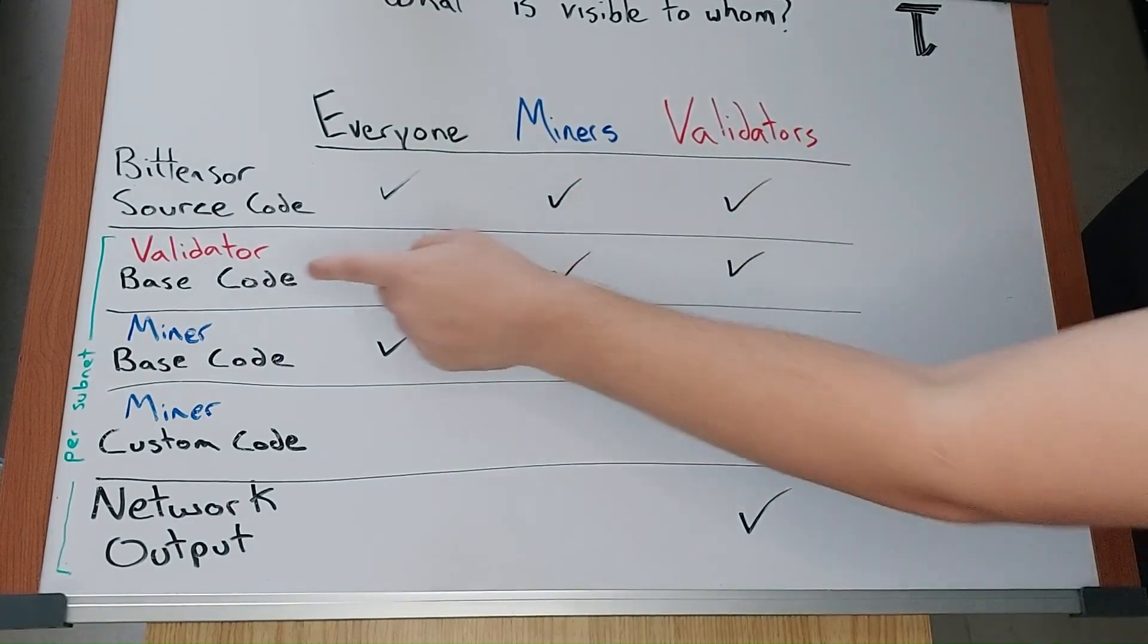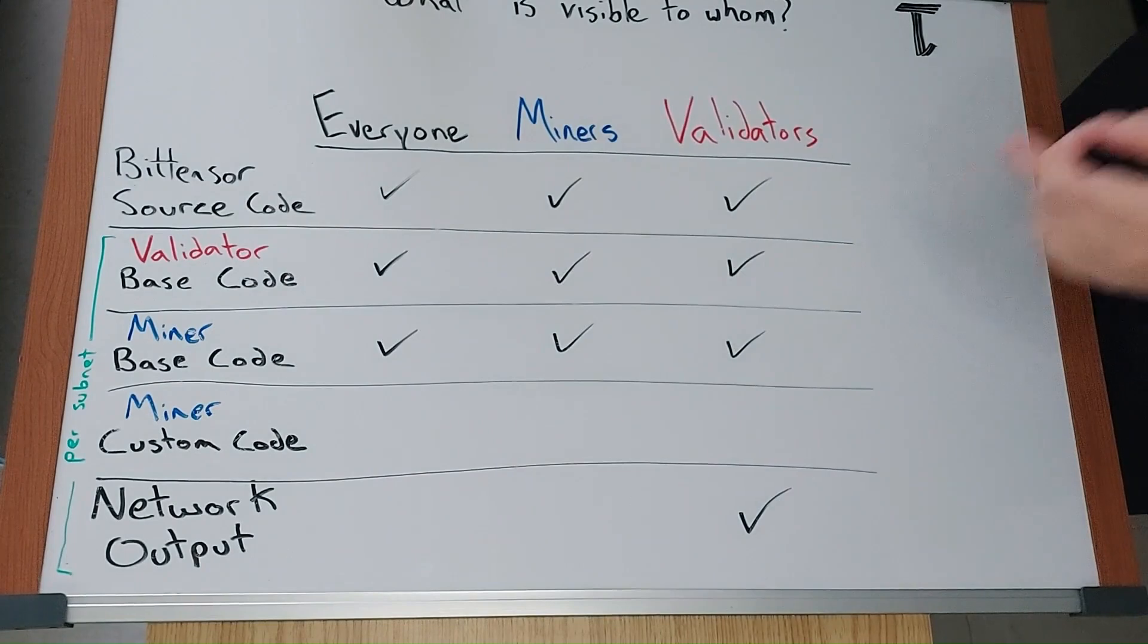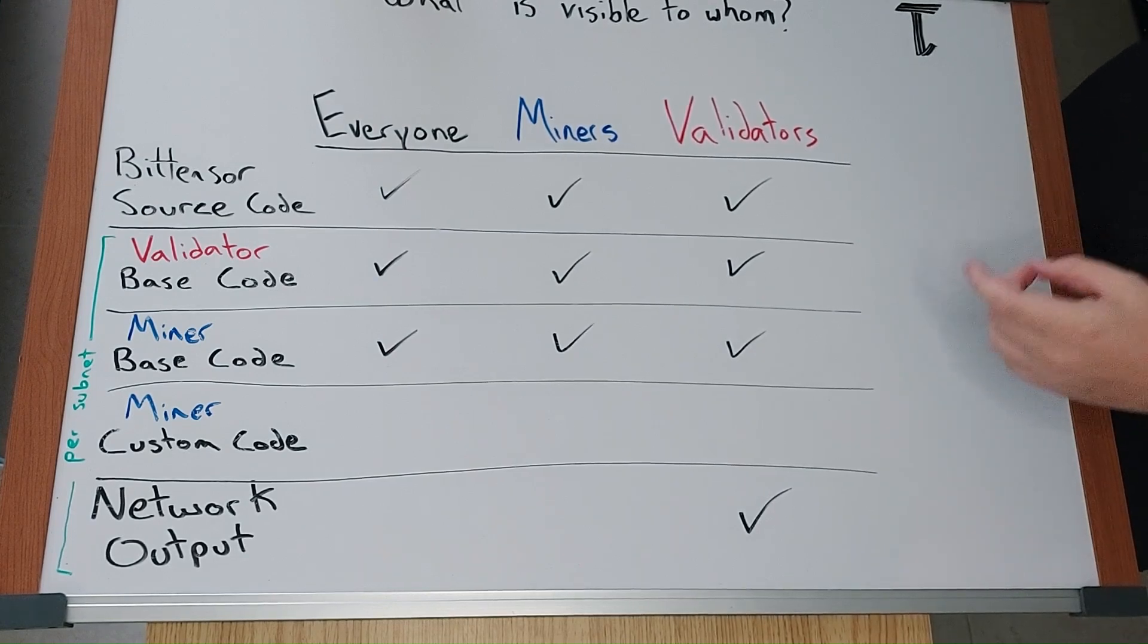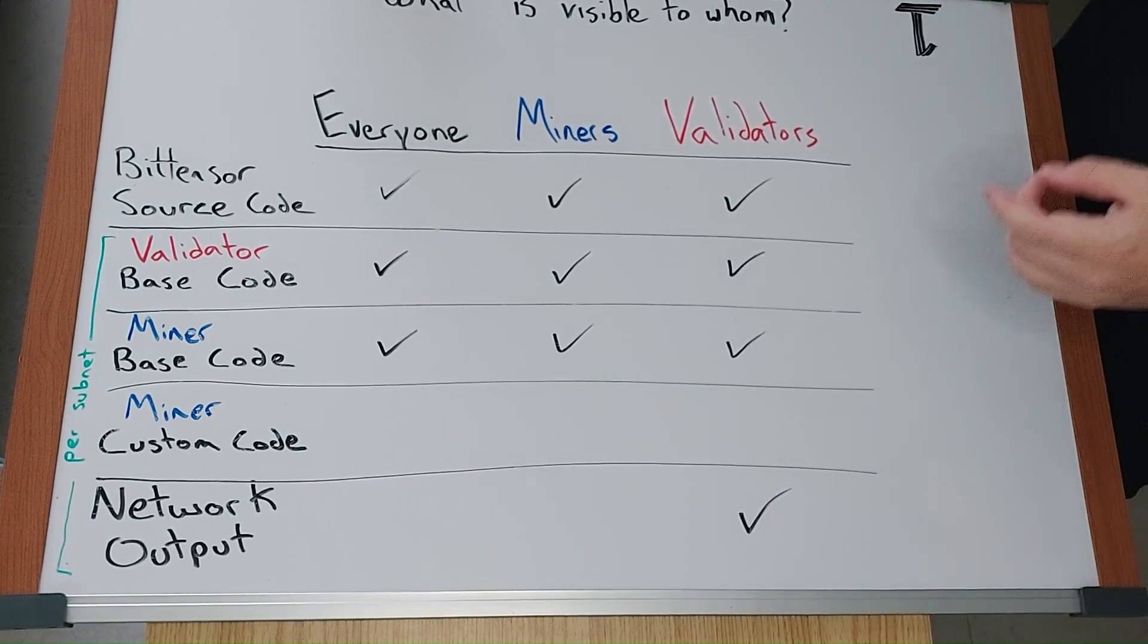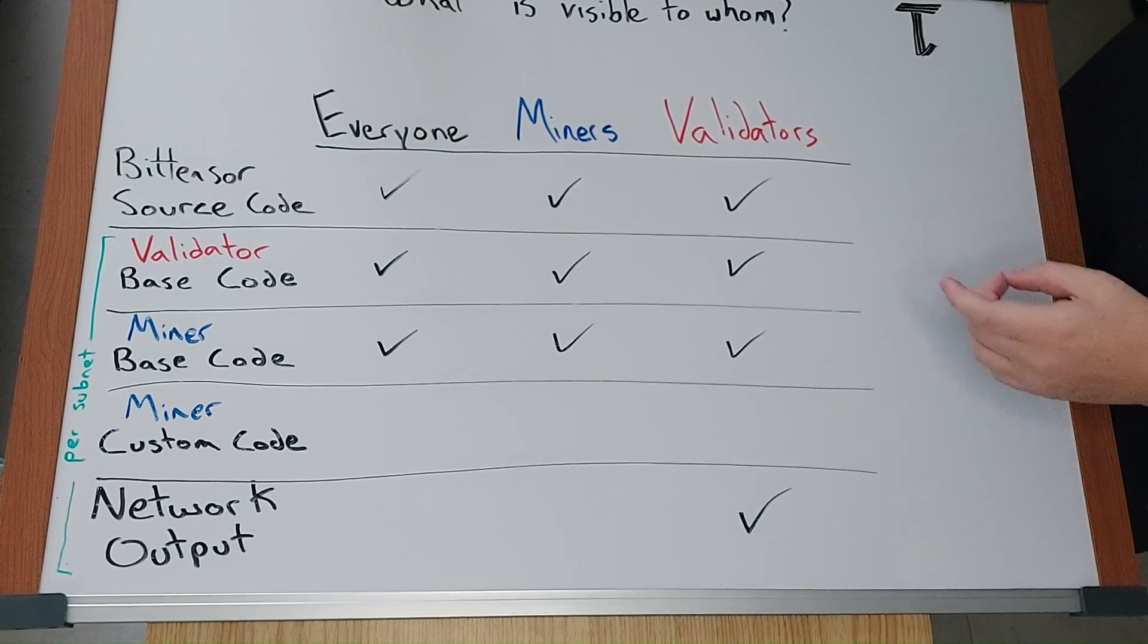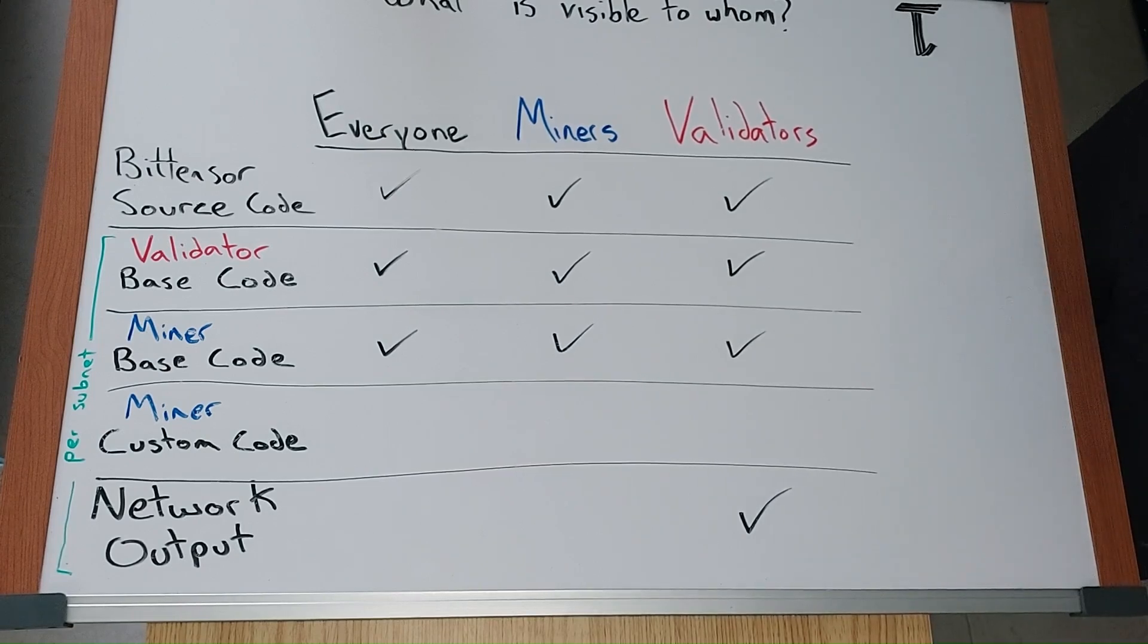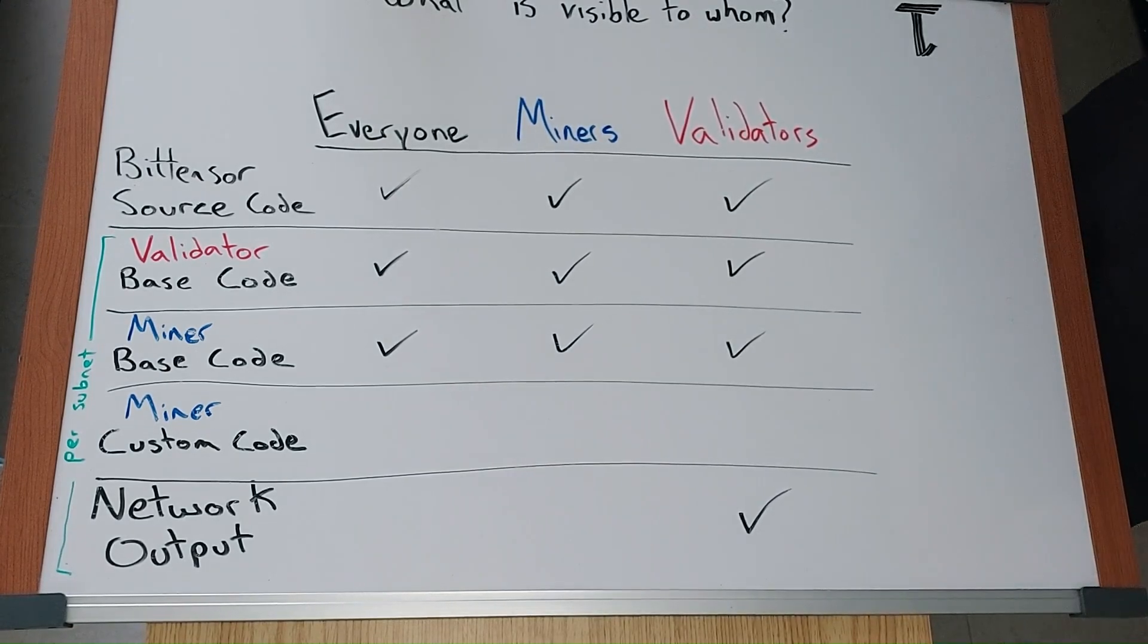For me, validation code being open source is really important as it allows everyone to confirm the truth about what miners are providing. Knowing the truth about what miners are required to produce is incredible. It's like trustless truth. It blows my mind to think about this, so I'm going to stop here.